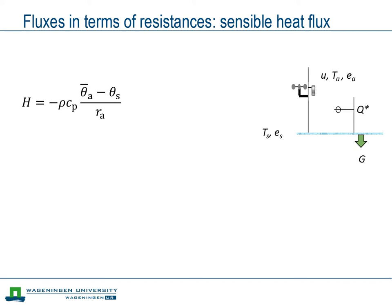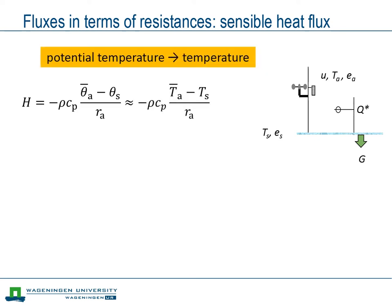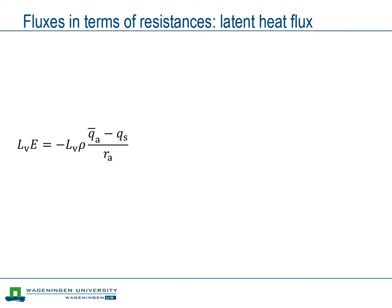So let's start with the resistance expression for the sensible heat flux. Since we are using observations close to the surface, the height difference is sufficiently small that we can ignore the difference between potential temperature and normal temperature. This assumption is not essential for the Penman method, but we make it to end up with an expression similar to what is often found in literature. In the expression, two temperatures are involved: the air temperature and the surface temperature. Likewise, we use the resistance expression for the latent heat flux.